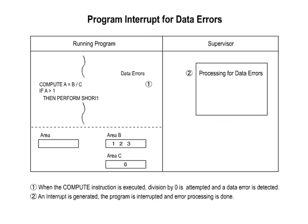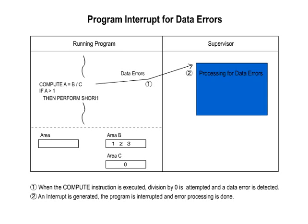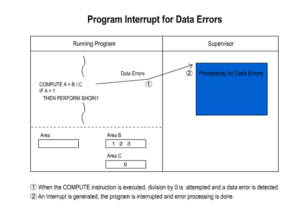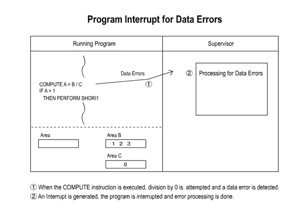B. Program Interrupt: This interrupt is generated by the following errors that occur when a program is running: Division by 0; Overflow — the operation result exceeded the range that could be expressed; Memory Protection Violation — a prohibited location in main memory was accessed; Execution of an undefined instruction code.